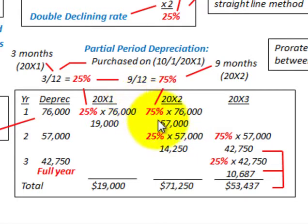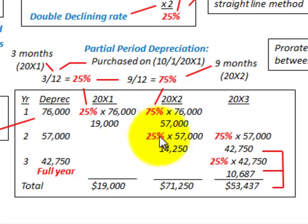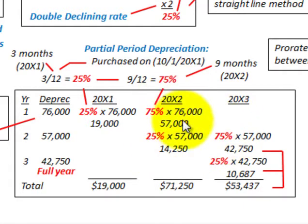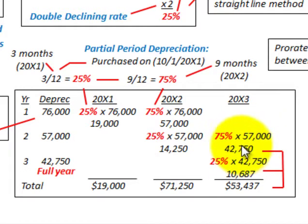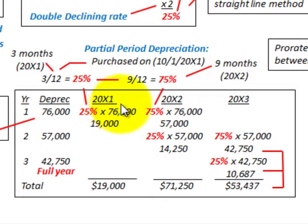We proceed in the same fashion since our partial depreciation period runs from October 1st of each year. For 20x2, the depreciation expense for that full year is $57,000, so we take 25% times $57,000 to get $14,250. For 20x3, we take 75% times the depreciation expense of $57,000 to get $42,750. You can see the pattern of how we're prorating the depreciation between years.